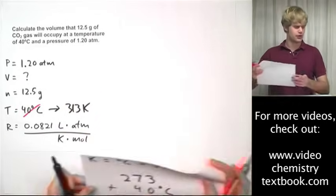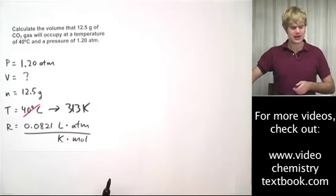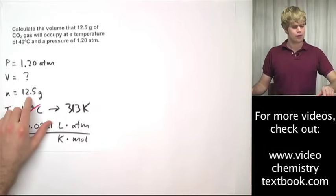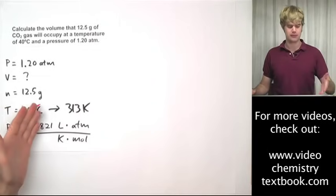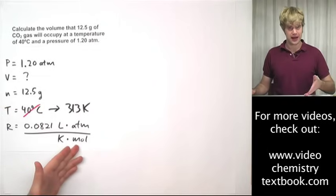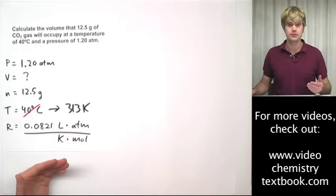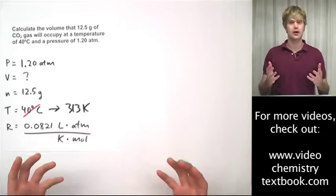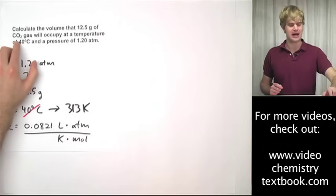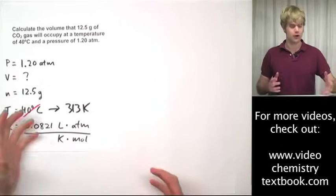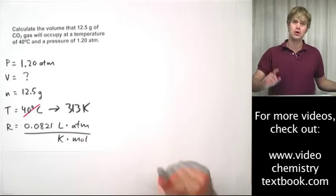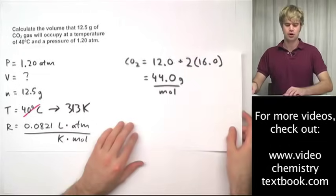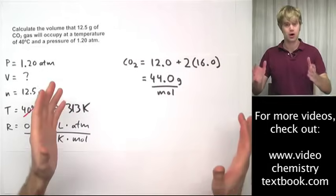The next thing that we have to do though is look here at the amount of gas we have, n. Right now it's reported in grams, 12.5 grams. But to use it in the ideal gas law, it needs to be in moles. So this means that we're going to have to use the molar mass of CO2 to convert from grams of CO2 into moles of CO2.